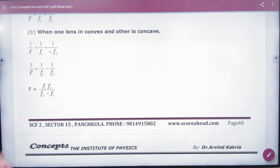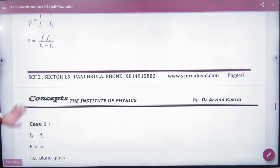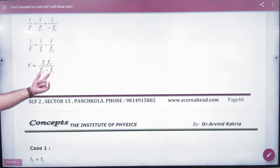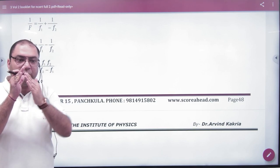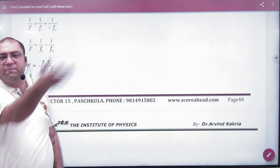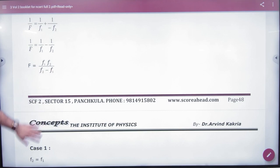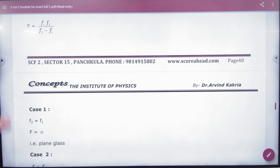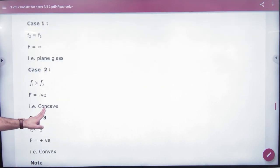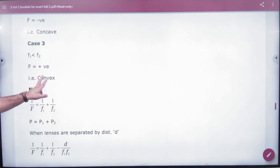Equal focal length is a special case. If F1 equals F2, that means one is convex and one is concave and the focal length is equal, F is infinity because the combination will act like a plain glass. One will converge and the other will diverge. But if F2 is greater than F1, or F1 is greater than F2, what will the focal length be? Negative. So the overall lens, how will it act? Concave, because the overall focal length is negative. And if the overall focal length is positive, it will work like convex.